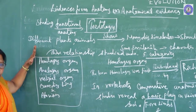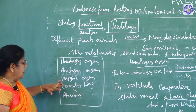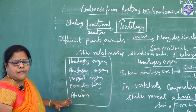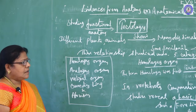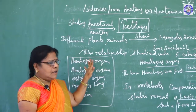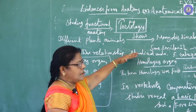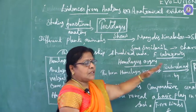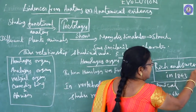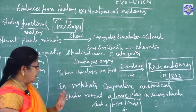The first one: homologous organ. Second: analogous organ. Third: vestigial organ. Fourth one: connecting link. And the fifth one: atavism. The term homologous was introduced by Richard Owen in 1843.